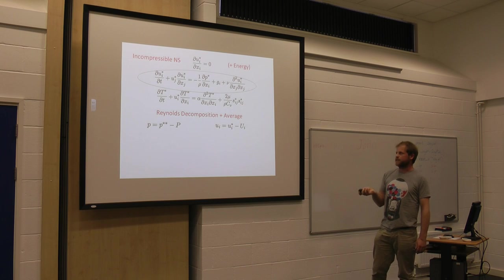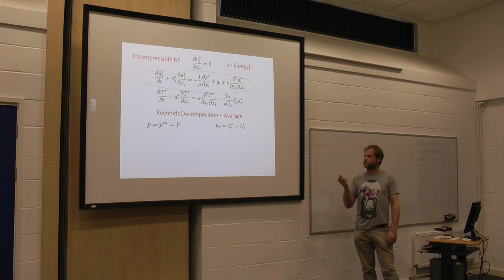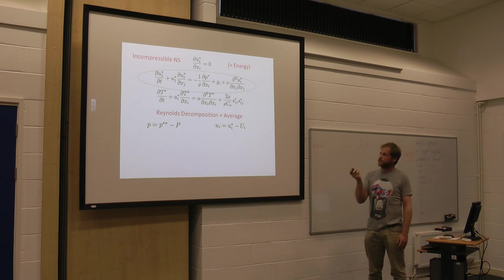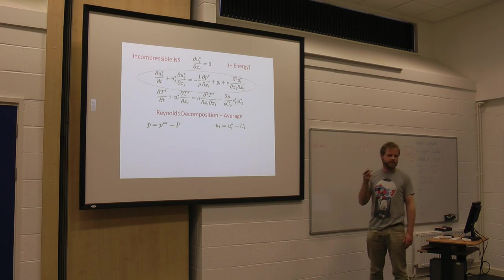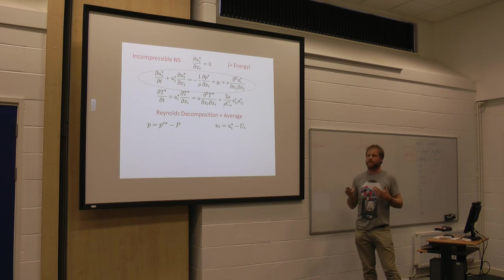We take a momentum equation, we do a Reynolds decomposition, so we break each quantity of interest into fluctuating and mean parts. The reason we're doing this is because we can't possibly resolve all of the scales in time and space that's going on.